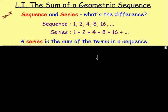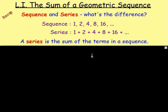In the last lesson we were looking at a geometric sequence. A geometric sequence is one where, to get the next term, you multiply by the same number each time. For example, this is a geometric sequence because we're multiplying by 2 every time: 1 times 2 is 2, 2 times 2 is 4, 4 times 2 is 8.